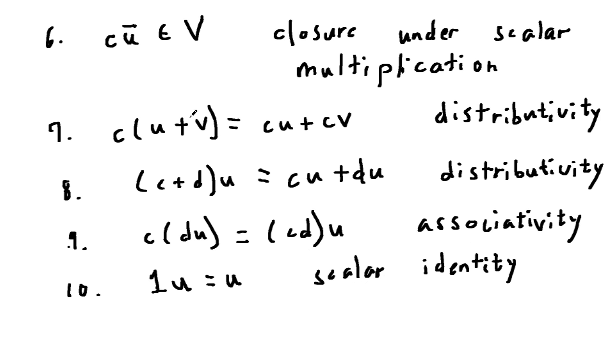So there you have it, all the ten properties of a vector space. If any set V satisfies these ten properties, then it's a vector space.